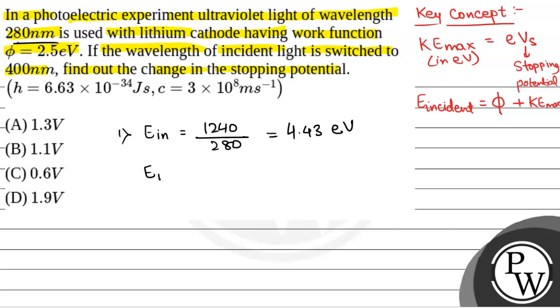We will have energy incident is equal to work function φ plus KE_max. So, in the first case, we will have 4.43 is equal to work function which is given as 2.5 electron volts plus KE_max. We have to find it out.